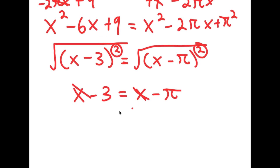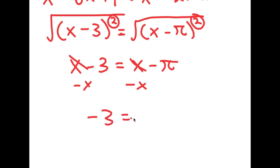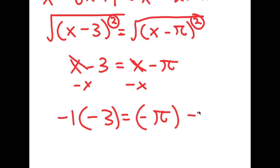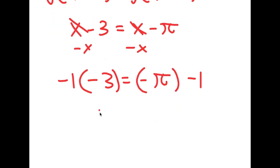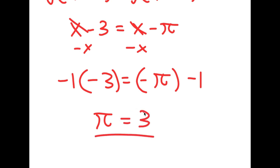So I get x minus 3 is equal to x minus pi. Now I'm going to cancel these two x's by subtracting x on both sides. So now I get negative 3 is equal to negative pi. And if I multiply both sides by negative 1, I get pi is equal to 3. So there you have it — I just proved that pi is equal to 3.